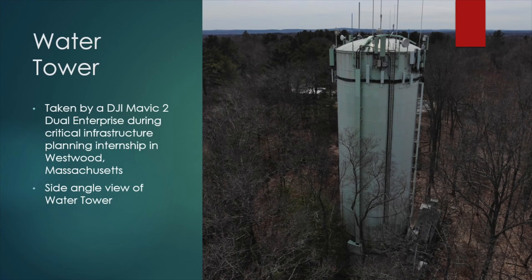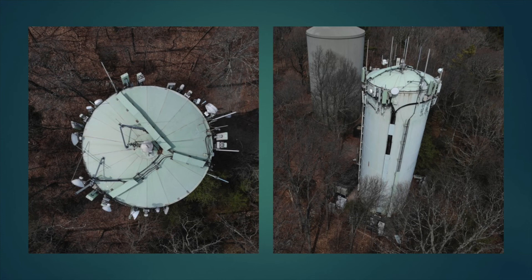Here we have a photograph of a water tower captured by a DJI Mavic 2 Dual Enterprise. This UAV was operated during my 6-week internship period working on critical infrastructure planning in Massachusetts. As you can see, the altitude from which this image is taken is far higher than any other type of infrastructure photography and still results in a clear and precise image of the location. This is the same water tower featured in the previous slide, however, it is now taken from other altitudes and angles. On the left we have what is called a balcony view of the water tower, and on the right is a slightly angled property view. Each image captured by the UAV is tailored to the drone pilot's preferences on how to best capture each infrastructure.